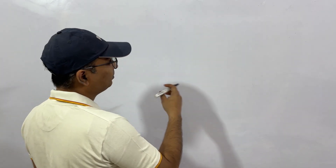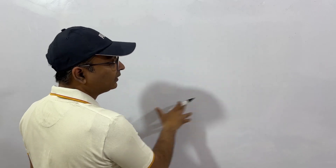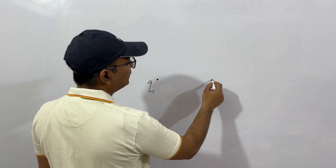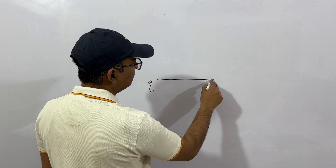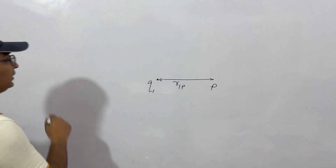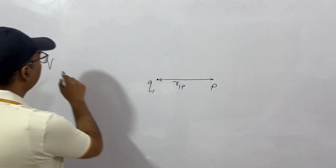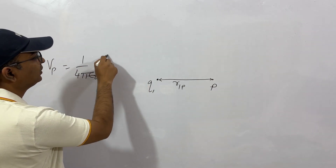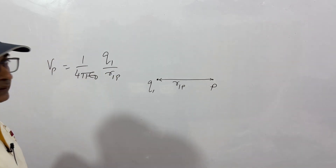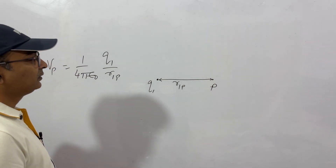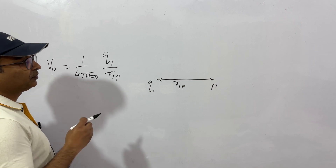We have discussed electric potential — what is electric potential? Just a recap: if there is an electric field, or let's say we have a charge q1, because of this we have electric potential at some point P. If this distance is r1, and r1P is the position vector, then the potential at P due to charge q1 will be 1 by 4 pi epsilon_0 times q1 by r1P.